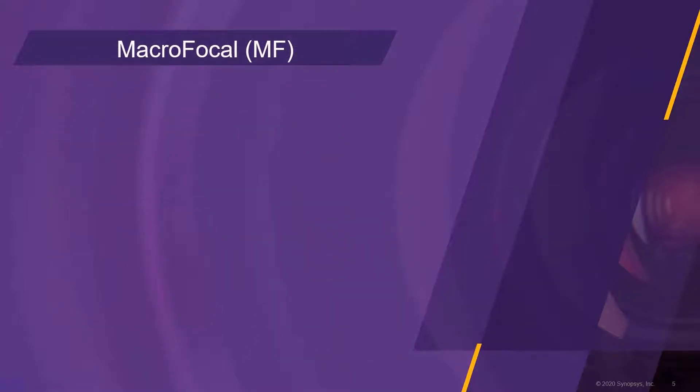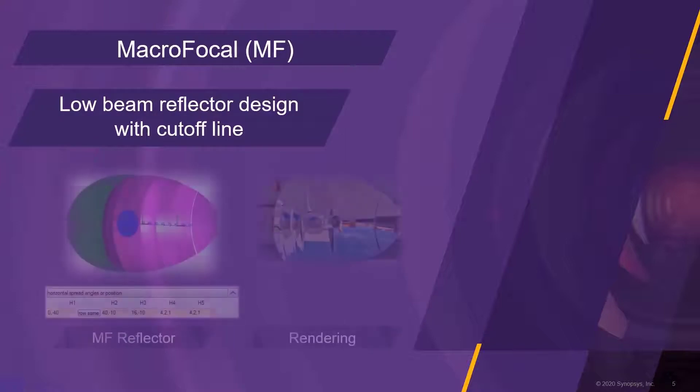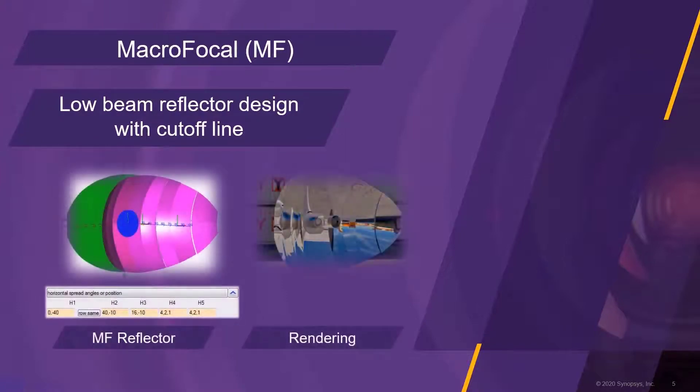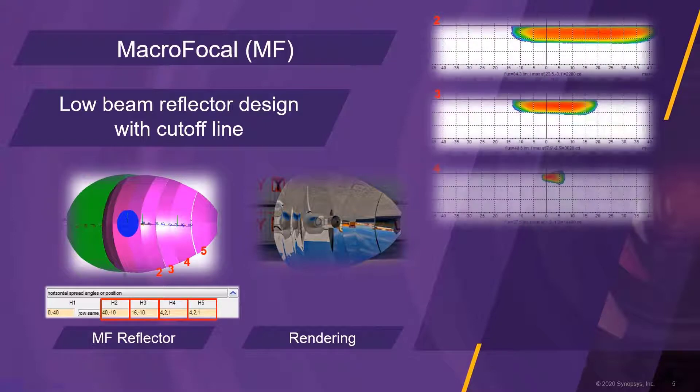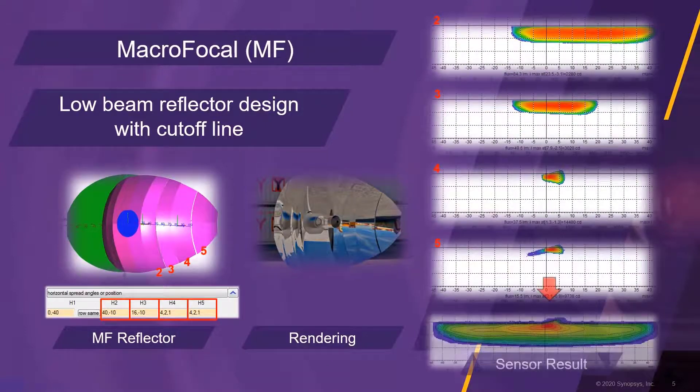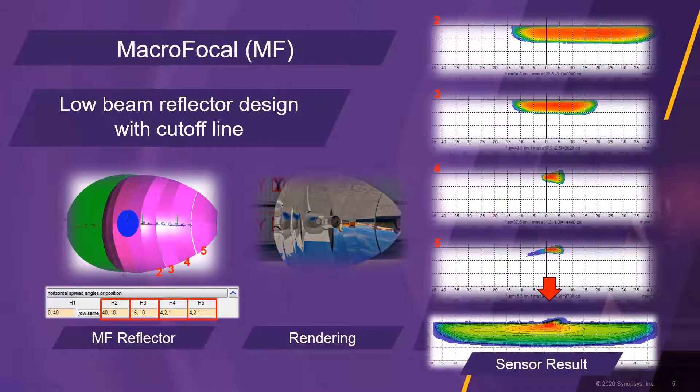The macro focal tool utilizes the FunGeo principle. In this example, a low beam reflector consisting of multiple facets is designed. Each facet, numbered 2 to 5, has specific spread parameters which result in an individual light distribution with a cut-off line. The superposition of all facet contributions results in the complete low beam light distribution.